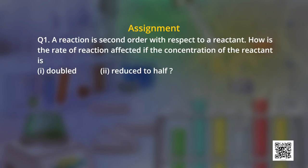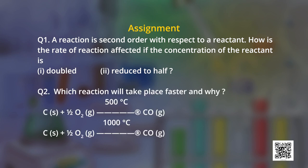Here are a few questions for you to solve and apply the concepts studied today. Question 1: A reaction is second order with respect to a reactant. How is the rate of reaction affected if the concentration of the reactant is doubled or reduced to half? Question 2: Which reaction will take place faster and why — carbon reacting with oxygen at 500°C to form carbon monoxide, or carbon combining with oxygen at 1000°C to form carbon monoxide? Keep practicing and keep learning. Thank you.